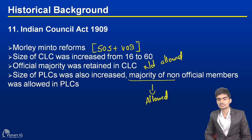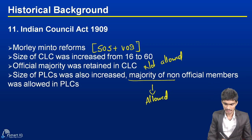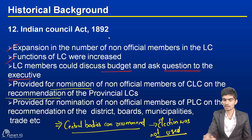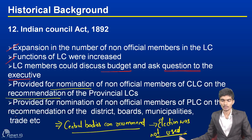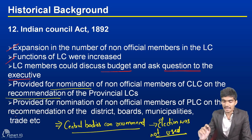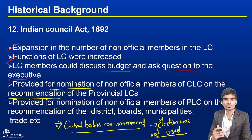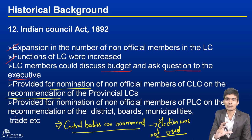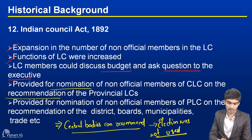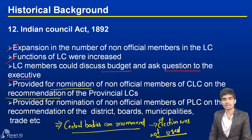Beginning with the Indian Council Act 1892, you can see the beginning of representative institutions. There is a sign of democracy, a form of federal features, and a form of representative institutions — all emerging from this act.